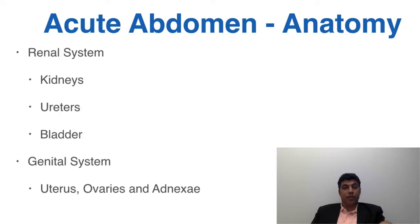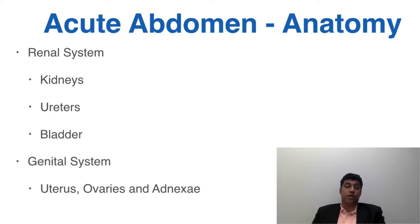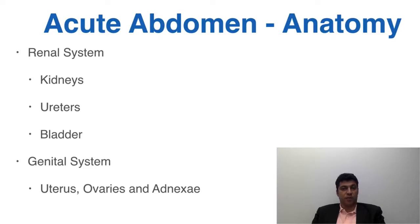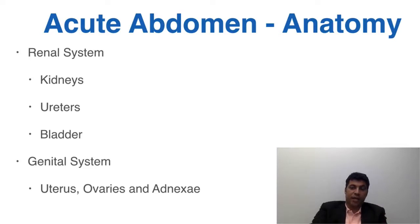We don't want to forget that the renal system — including the kidneys, ureters, and bladder — may be causes of acute abdominal pain. The intrapelvic genital organs like the uterus, ovaries, and fallopian tubes in females, undescended testes in males, and radiated pain from a testicular origin even in males with descended testes can all be sources of acute abdominal pain of anatomic origin.